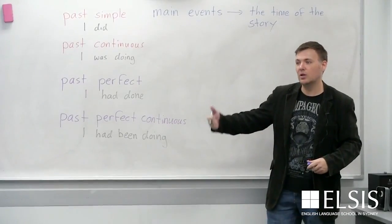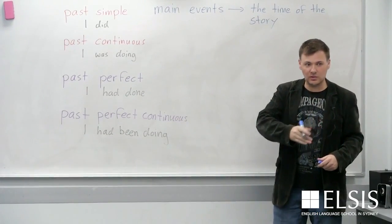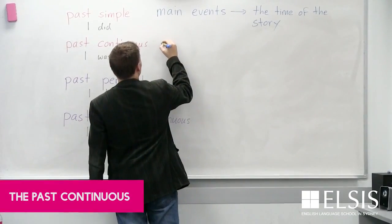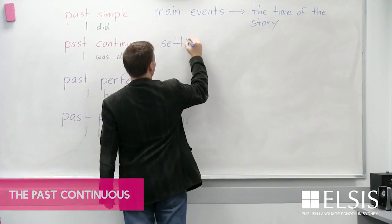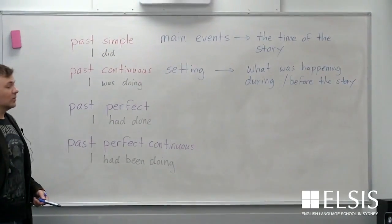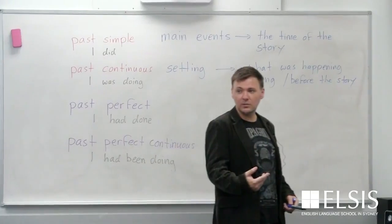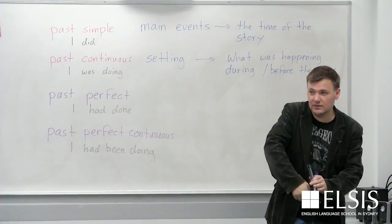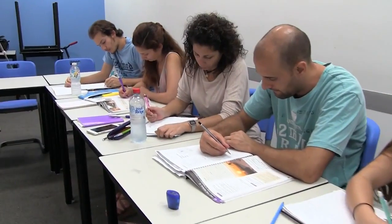We use the past simple for the main events in the story. The past continuous is for background actions — for example, 'I was walking in the park when a dog jumped.' And I killed it. No!